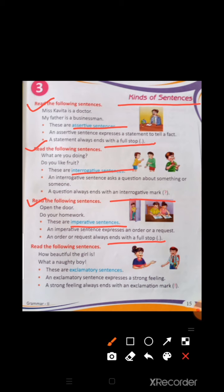Read the following sentences: How beautiful the girl is. What a naughty boy. These are exclamatory sentences. An exclamatory sentence expresses a strong feeling, and always ends with an exclamation mark. These are the kinds of sentences: first is assertive, second is interrogative, third is imperative, and fourth is exclamatory.